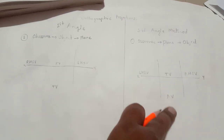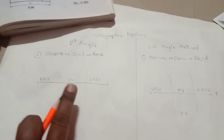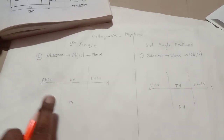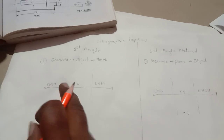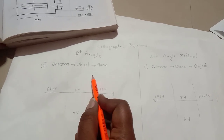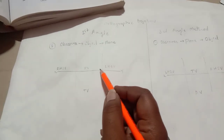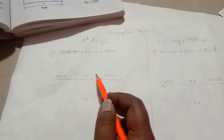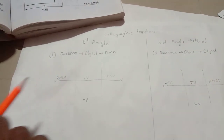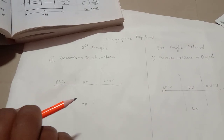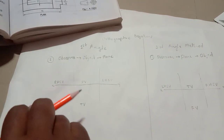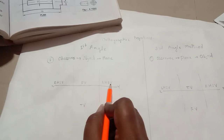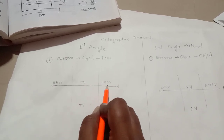For your syllabus, you have the first angle method of projections. Always remember: construct the front view above the XY line and the top view below the XY line. While observing the object from the left side, plot that view on the right side of the front view — only its location changes.